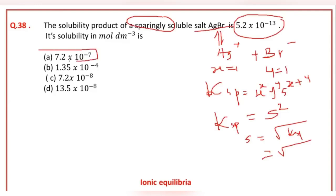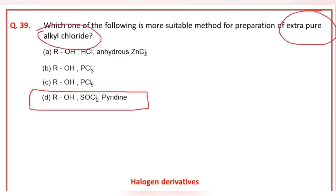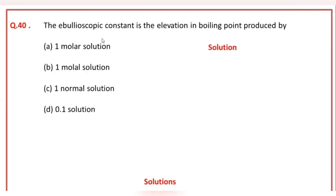Which one of the following is the most suitable method for preparation of extra pure alkyl halide? The correct answer is B option.